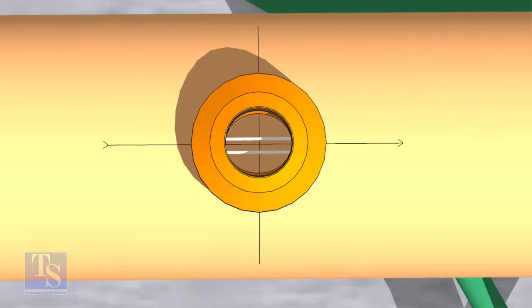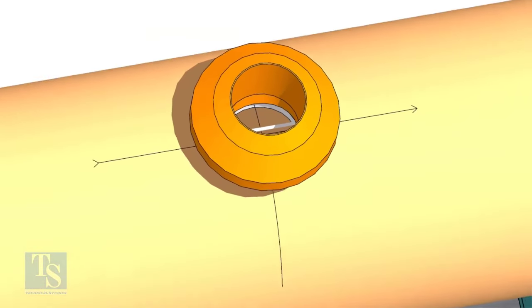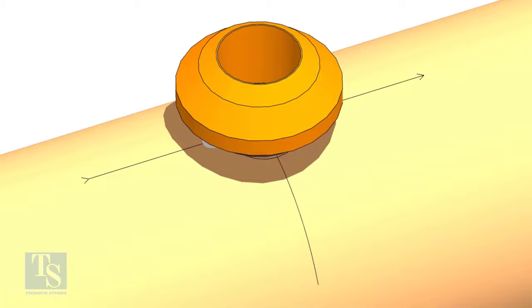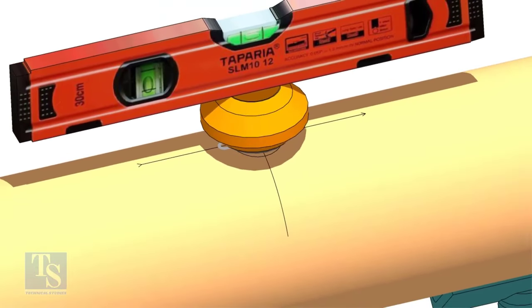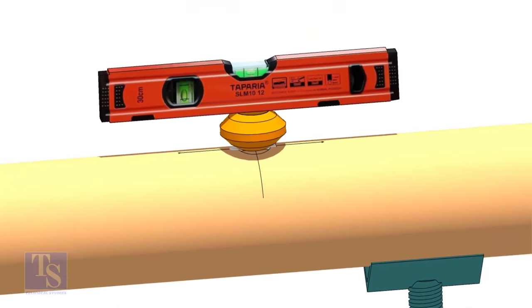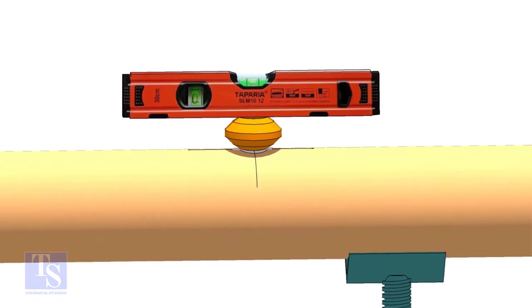Mark the gap rod. Look from the top and make sure the olet sits exactly on the center of the hole. Check the level from both sides.